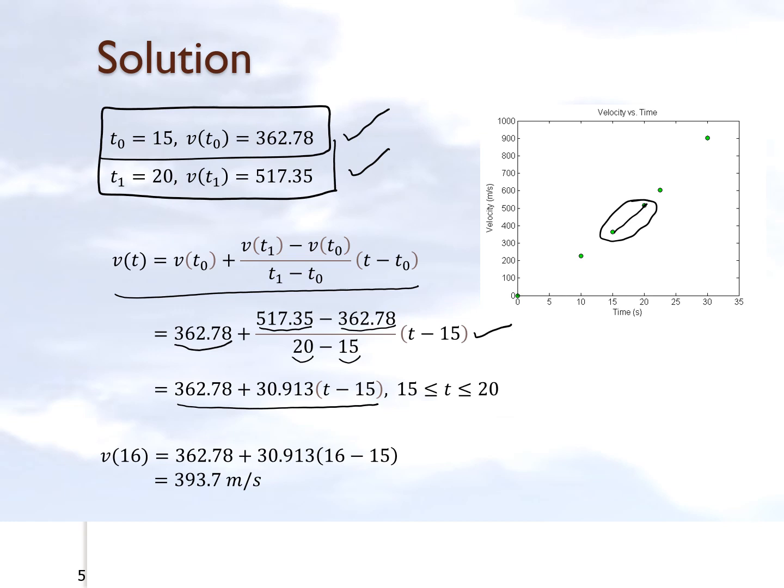We don't need to simplify this because in order to find the value of the velocity at 16, we can simply substitute the value of t equal to 16 and be able to find out what we are trying to find in the first place. It turns out to be 393.7 meters per second. And that is the end of this segment.